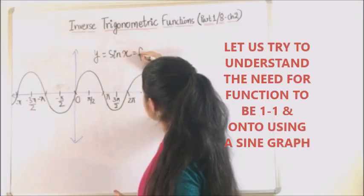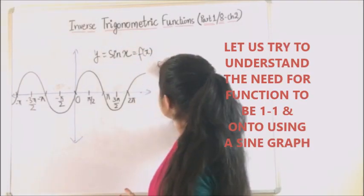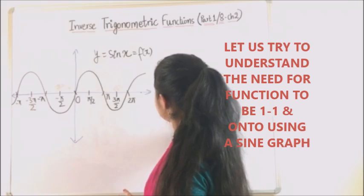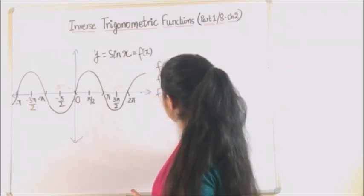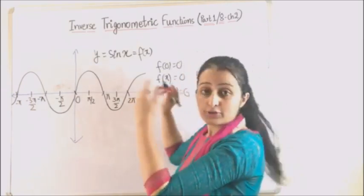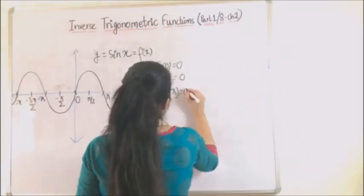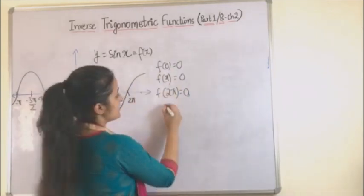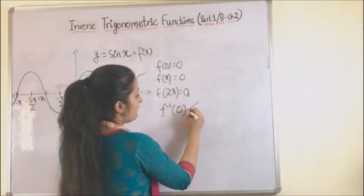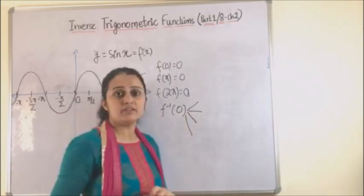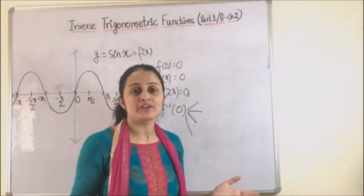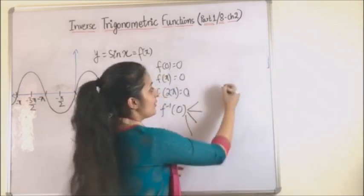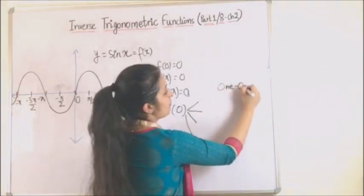If I call this function as f(x) then in this case f(0) = 0, f(π) = 0, f(2π) = 0, so on and so forth. So if I try taking the inverse for such a function what do I get? We get f inverse 0 giving multiple values which is not even a function. So one-one becomes important.